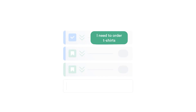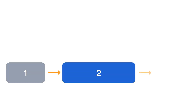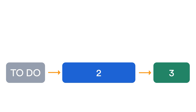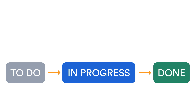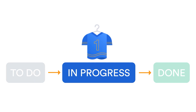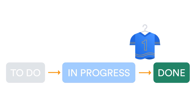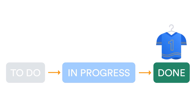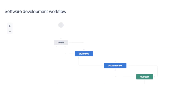To get project issues done, you need a work process. This is the sequence of steps done in order to reach a particular end. Your process could be as simple as to do, in progress, and done. Take, for example, our t-shirt order. First, this issue needs to be started. Then it's being worked on, so it's in progress. And finally, when the order is complete, the issue in JIRA is done. In JIRA, this work process is called a workflow. Every project has at least one workflow that the project issues must follow to complete.